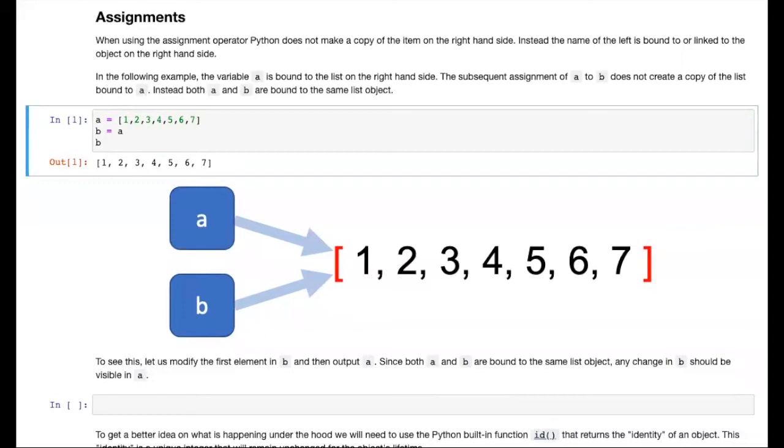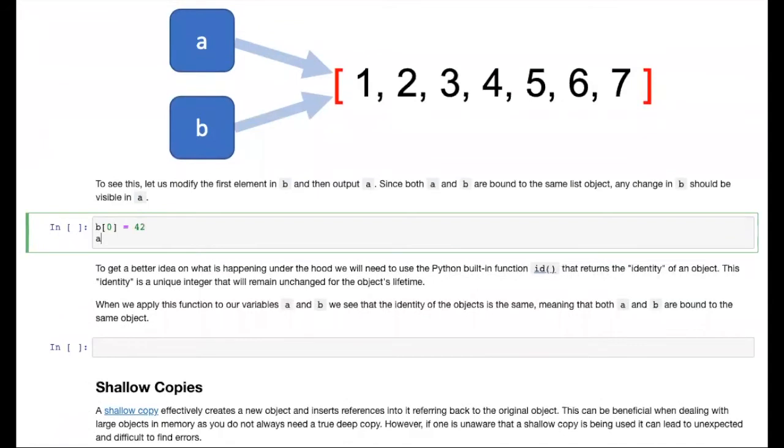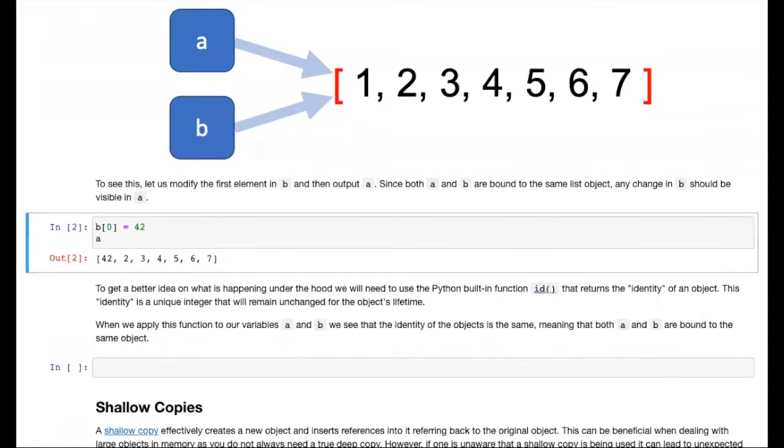But how do we know this is the same list object and not a new list object? Well, one way to check this is that we can make a modification to B and then see if A has also been modified. So to do that, we simply replace one of the elements of B, say the first element, and then we output A and see if A now has the value 42 as its first element. And in the output here, we see that that is indeed true. A has been modified, even though we explicitly modified B, not A. So we can conclude from this that both A and B point to the same list object.